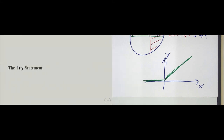Let's get to something else: the try statement. So far, we've seen how to execute code based on whether a condition is true. We've also seen many examples of code failing — raising an exception. A natural question arises: is it possible to catch an exception when it is thrown? Can we react to the occurrence of an exception — do one thing if an exception occurs and another if it does not? This is exactly what the try statement is for.